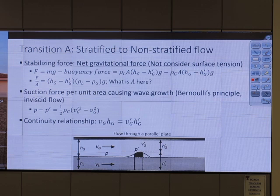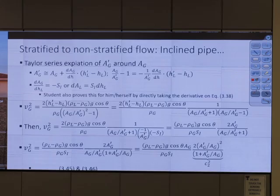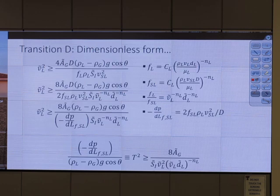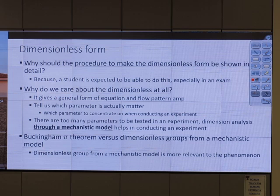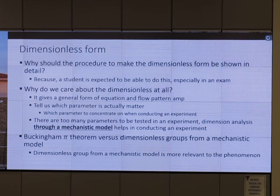Alright. You have seen the criteria: Transition A, B, C, D. It's not going to be in this exam. They are not in this exam. Even X and Y — X and Y can be in this exam; you should be able to read the chart. This exam. Transition A, B, C, D is not in this exam, but X and Y can be.